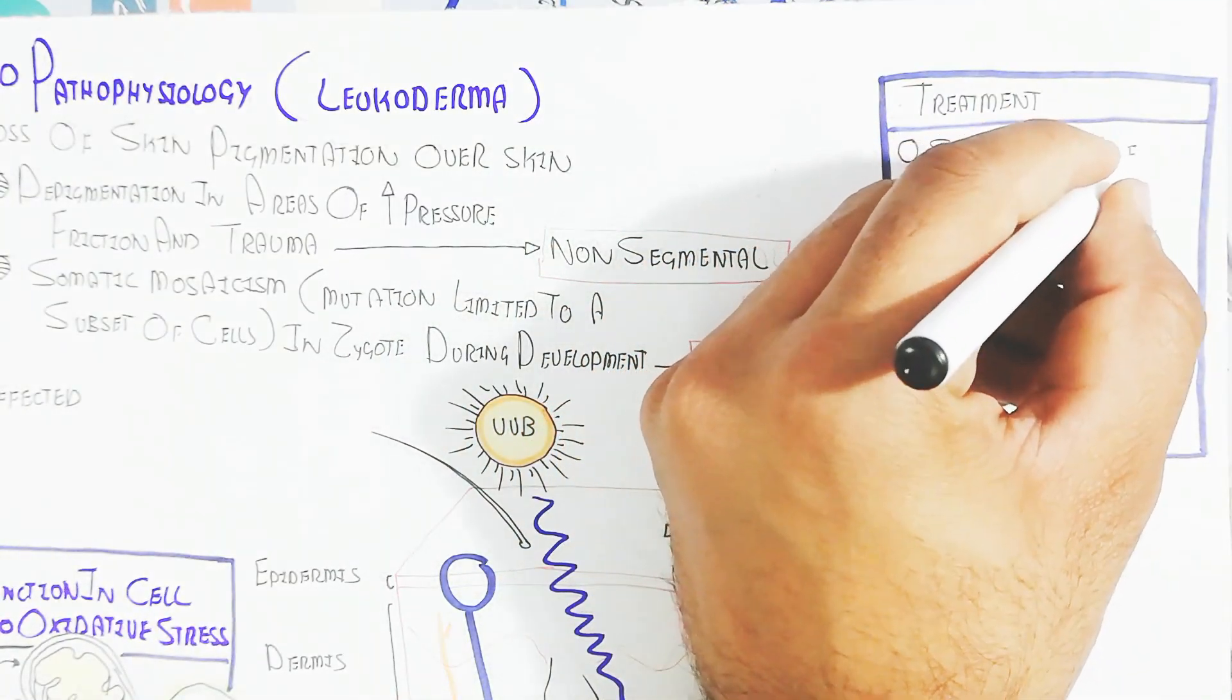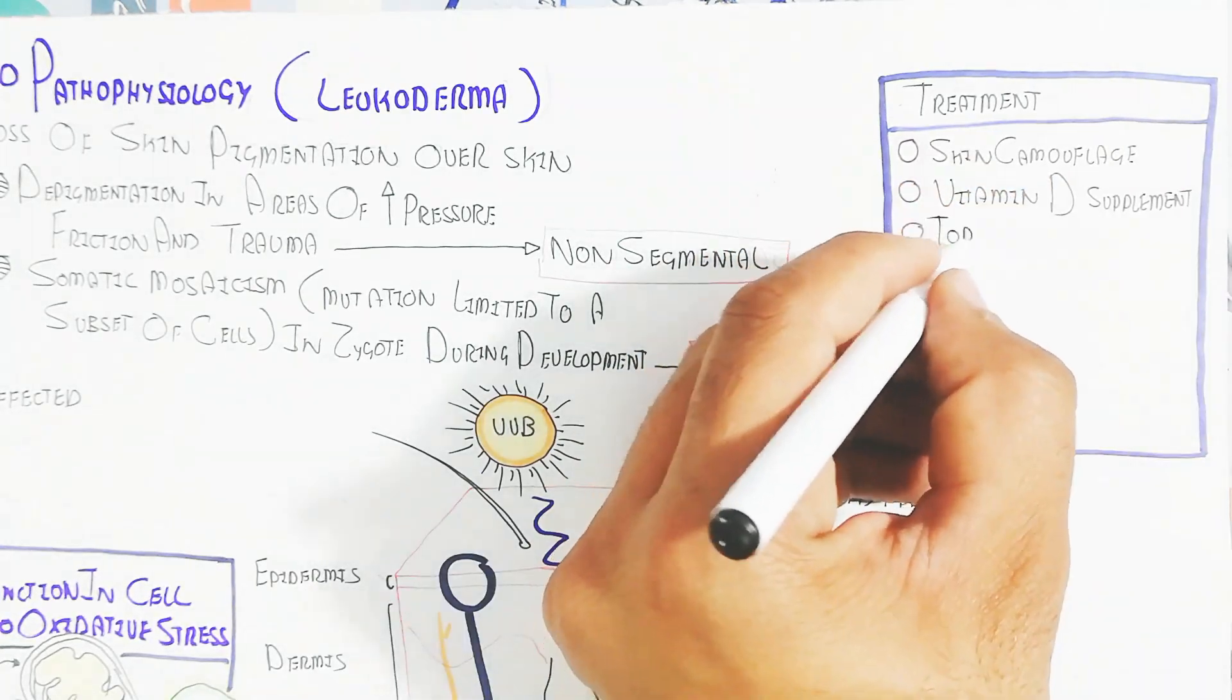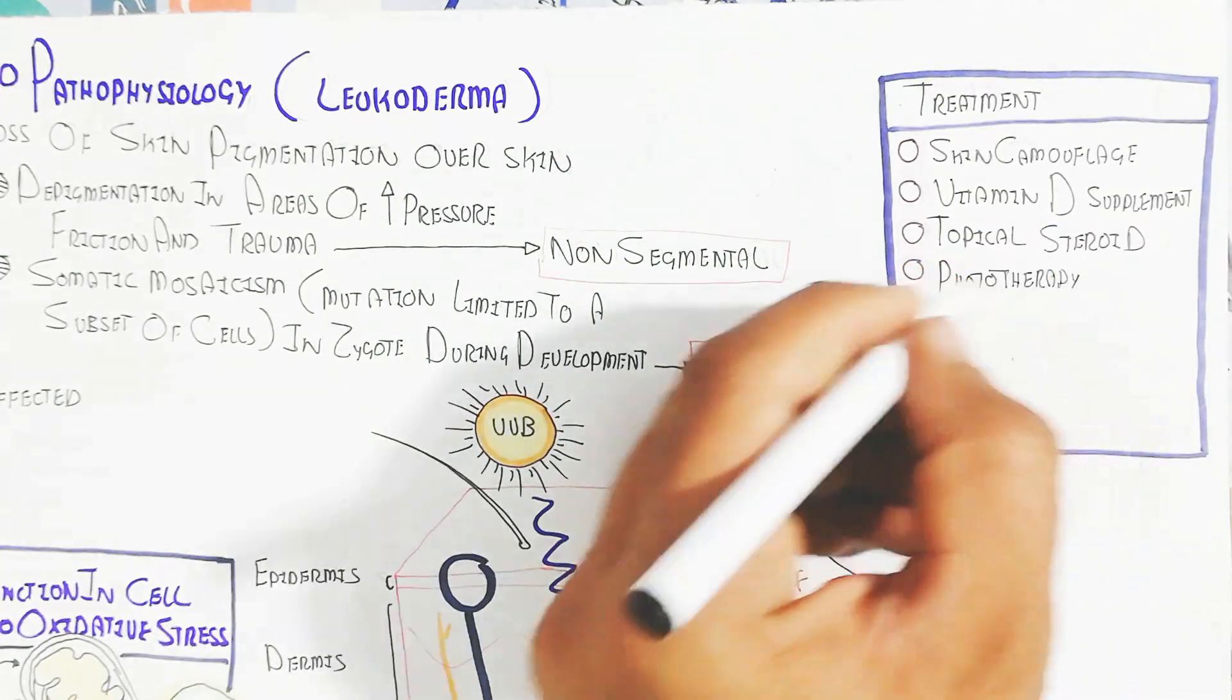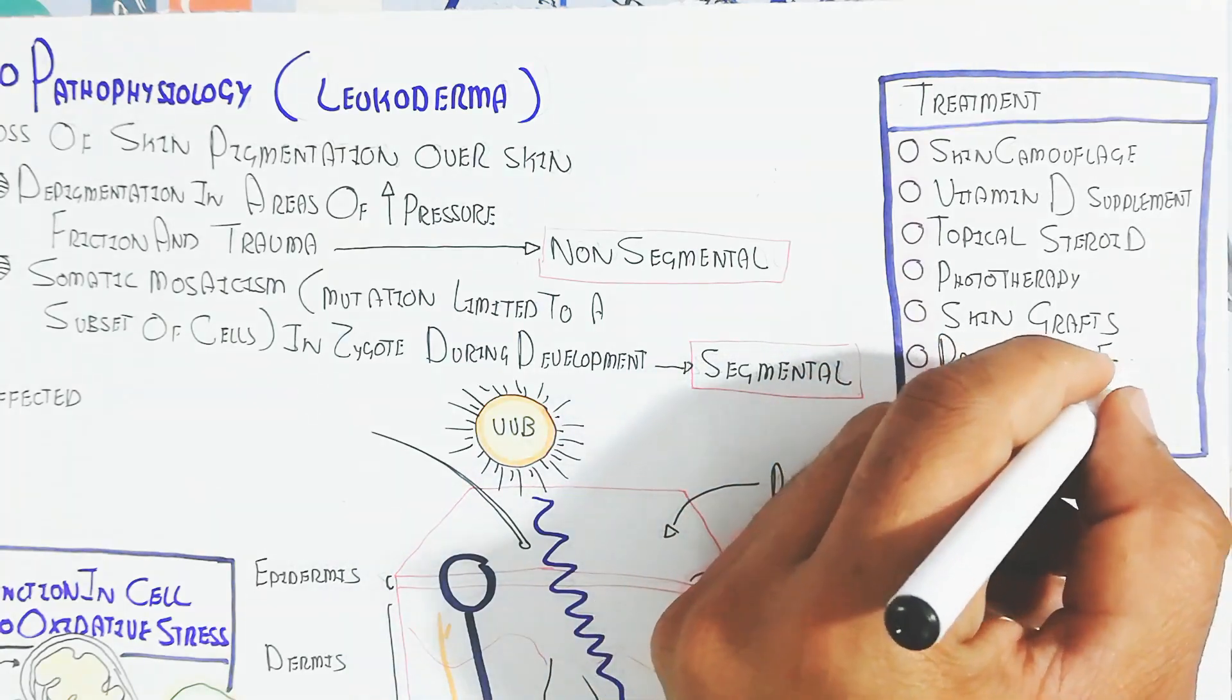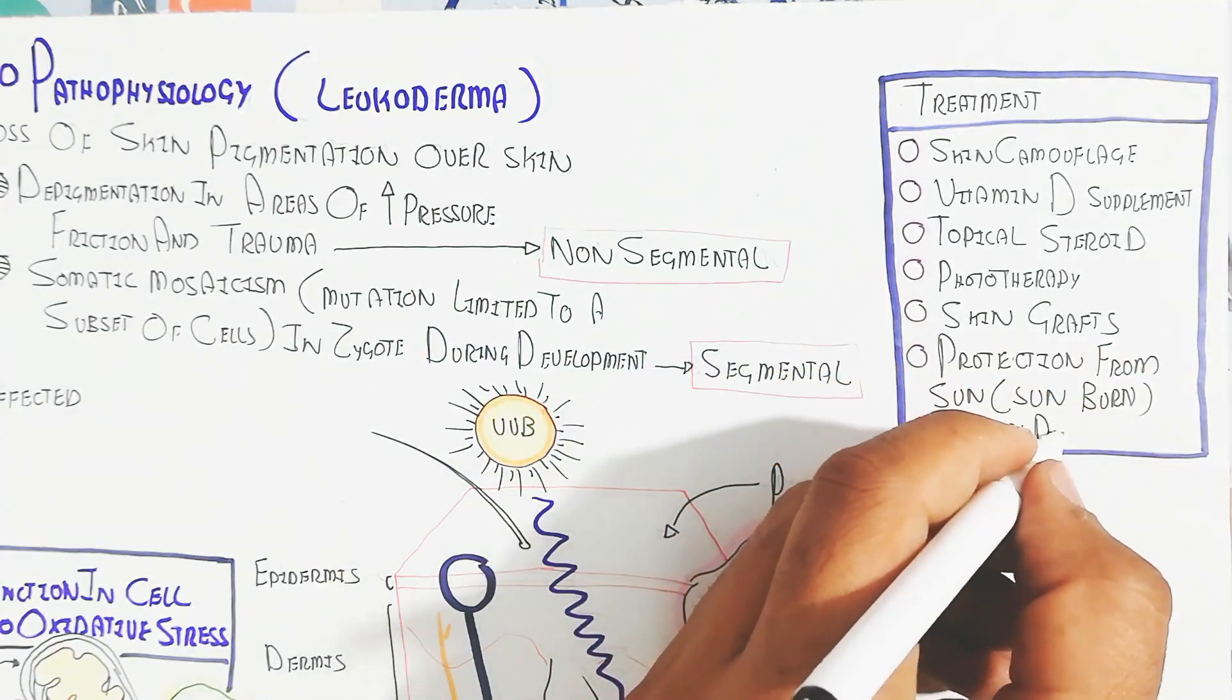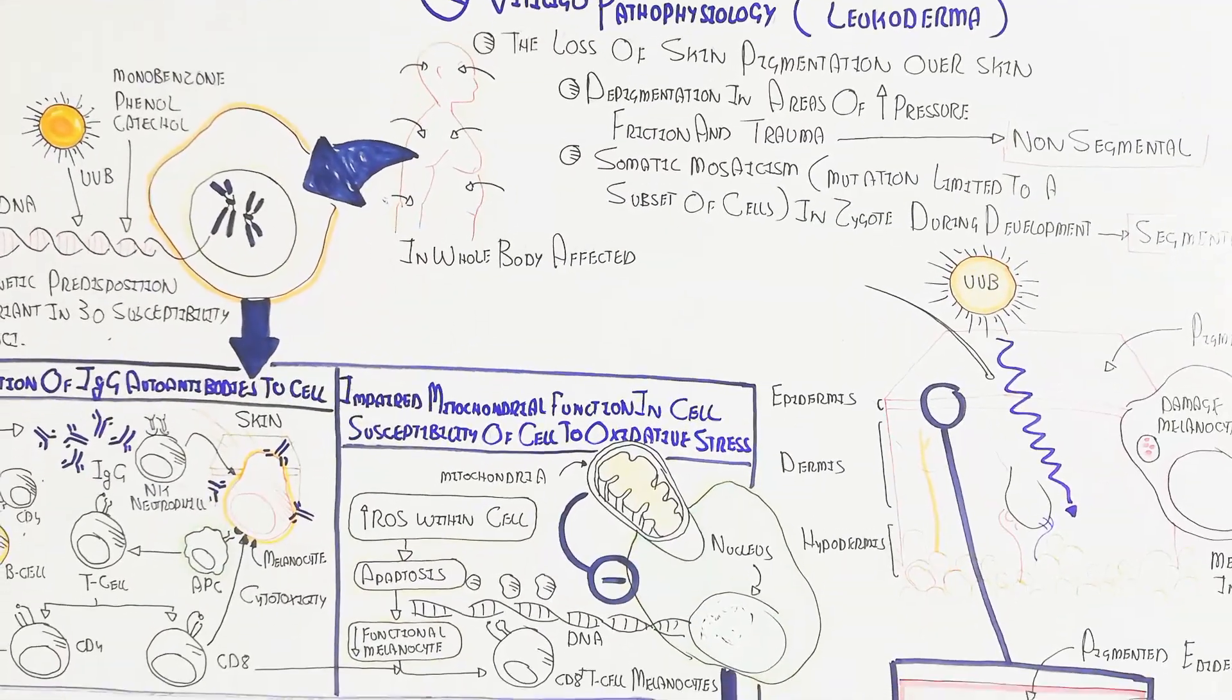Treatment can include skin camouflage, vitamin D supplement, topical steroids, phototherapy, and skin grafts. Protection from sunburn is important, as well as topical pimecrolimus.